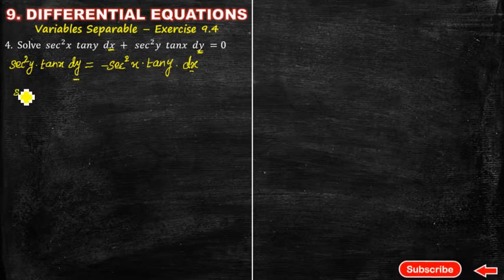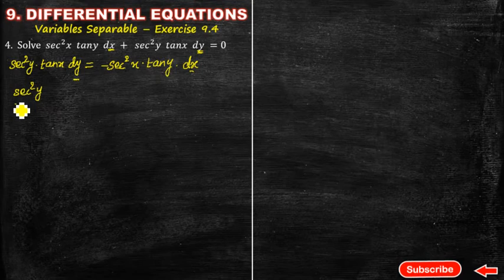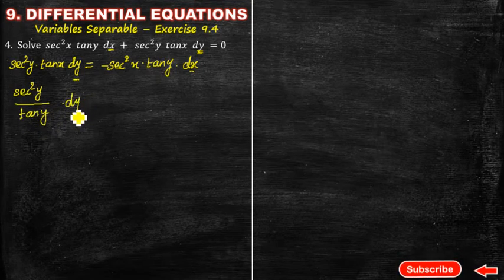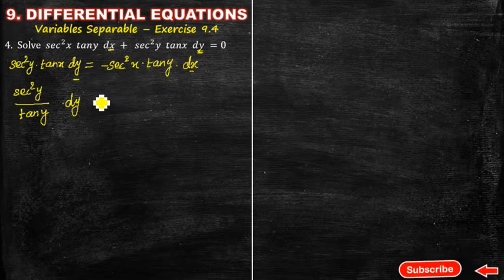Here, you are equal to, here secant squared y, so here tan y is equal to other divide. Here tan y. Okay. End dy. So, in the tan x, left-hand side is equal to. Here, you are equal to minus secant squared x divided by tan x.